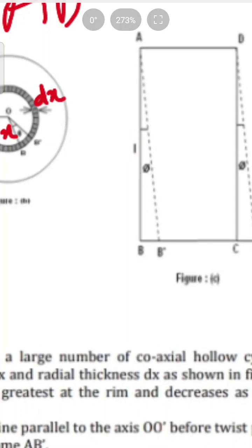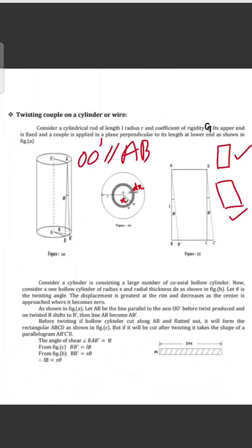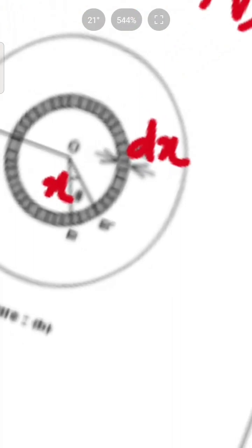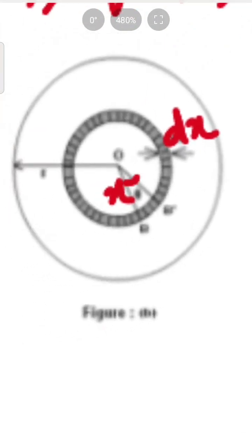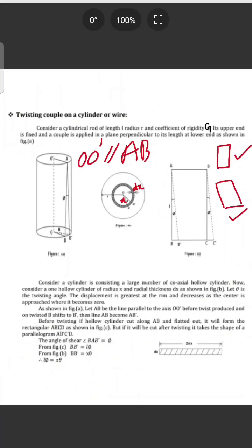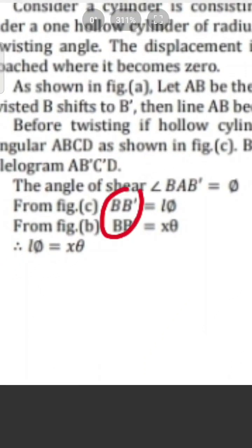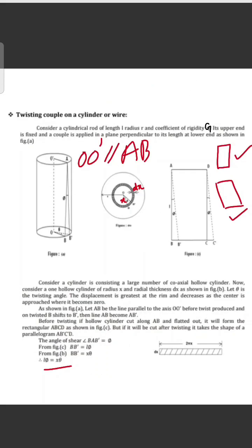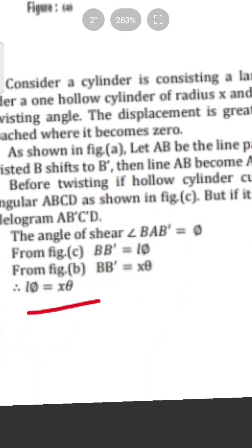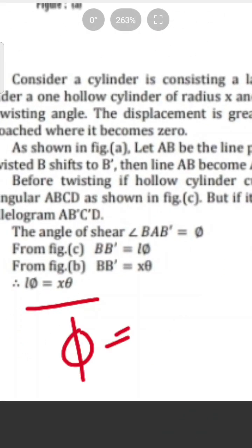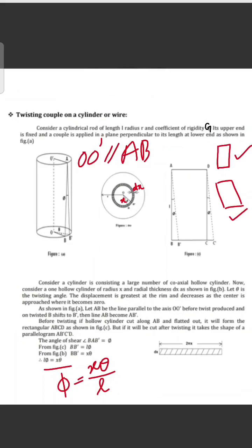From figure B, BB' is equal to x·theta. So from figures B and C, phi is equal to x·theta divided by L.